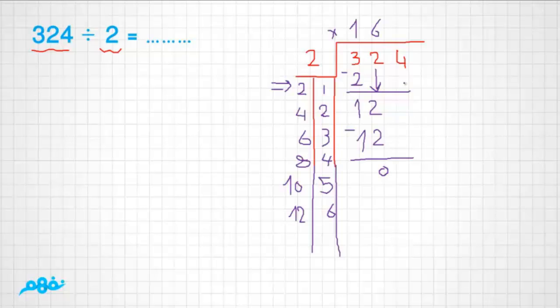Bring down four and divide four by two. Four divided by two is two because two times two is four. Two goes into four twice.